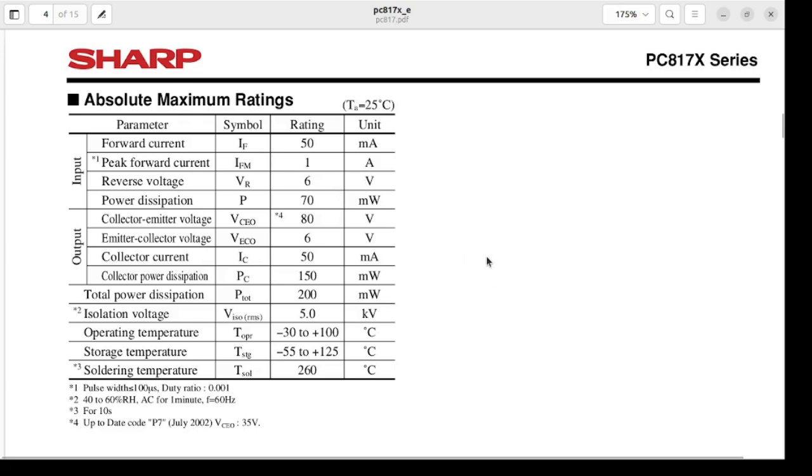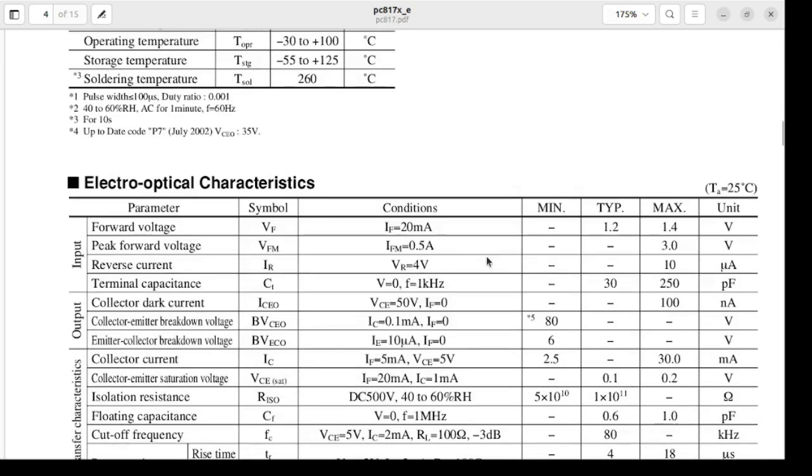We have to learn one more thing. Look at this: the peak forward voltage is 3 volts and forward voltage is 1.2 volts, max 1.4 volts. So we can calculate this value, I mean 3.0 volts.